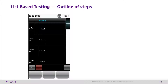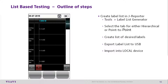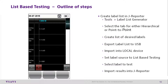For list-based testing, create a label list with JReporter by going to Tools, then Label List Generator. Select the tab for either Hierarchical or Point-to-Point. Create a list of desired labels, then export the label list to USB. Import it into the local device, set the label source to list-based testing, select the labels to test, and then import the results into JReporter.